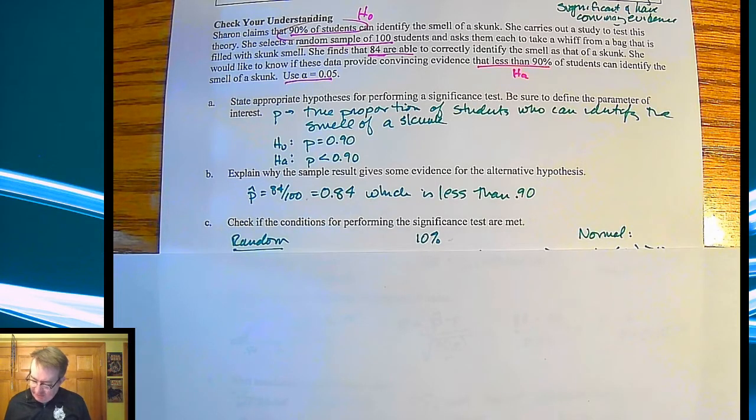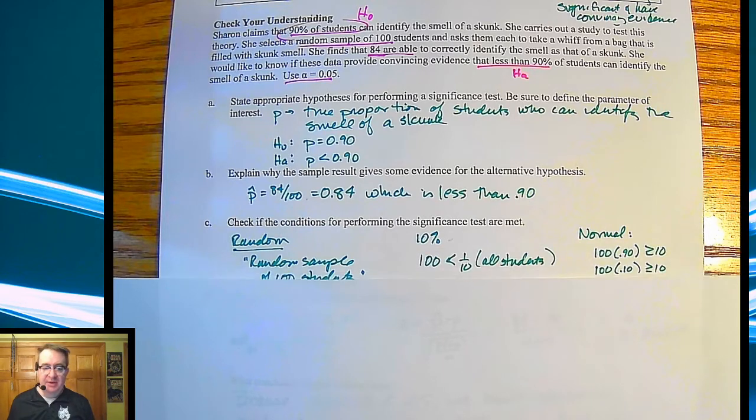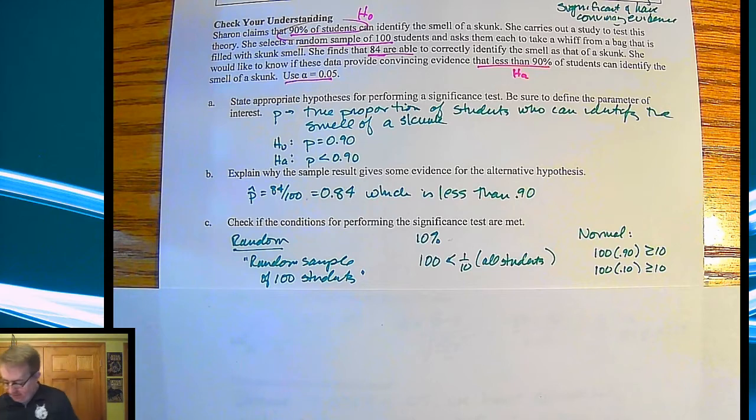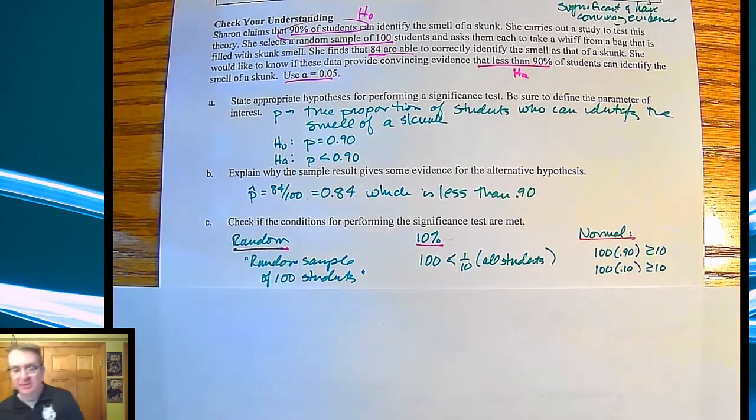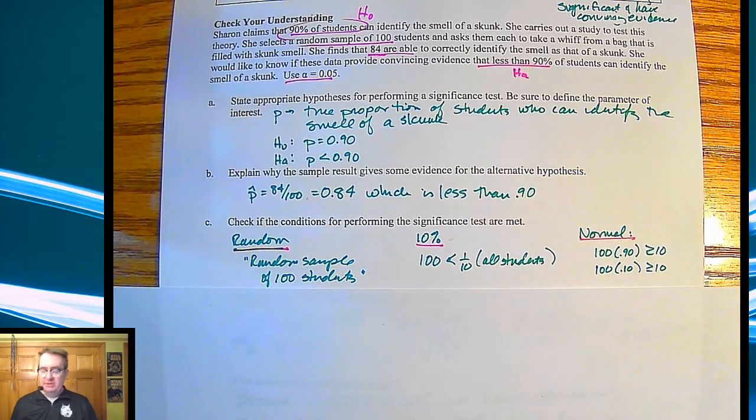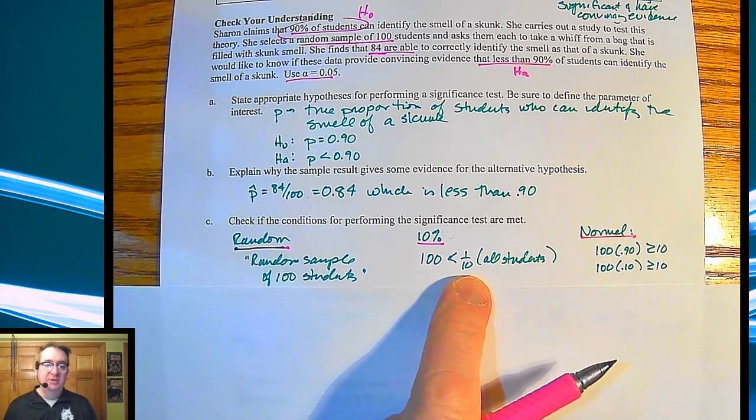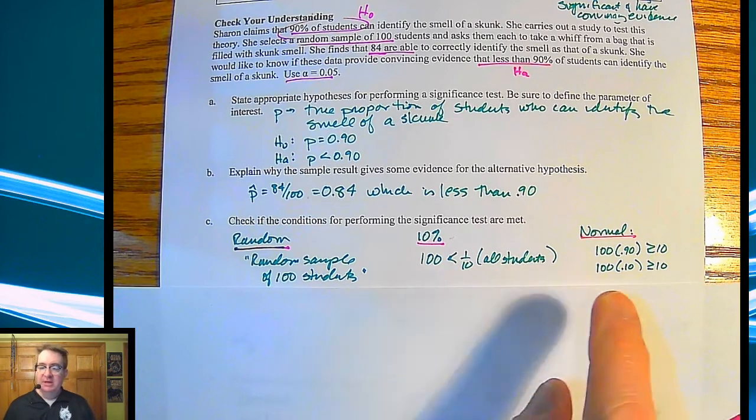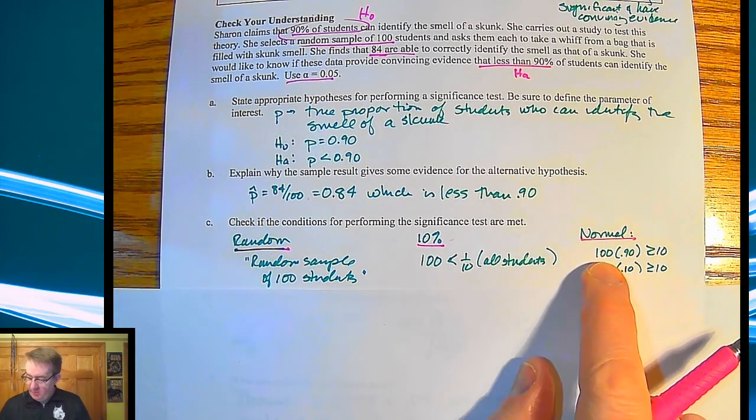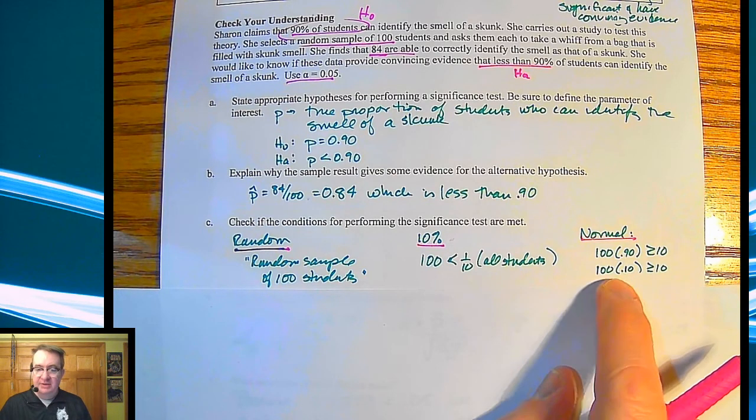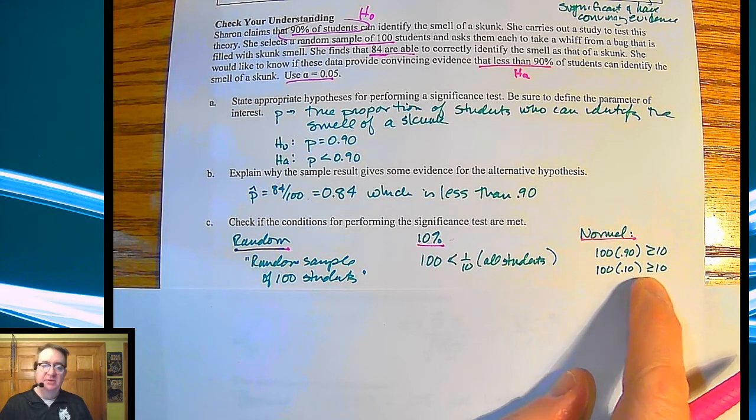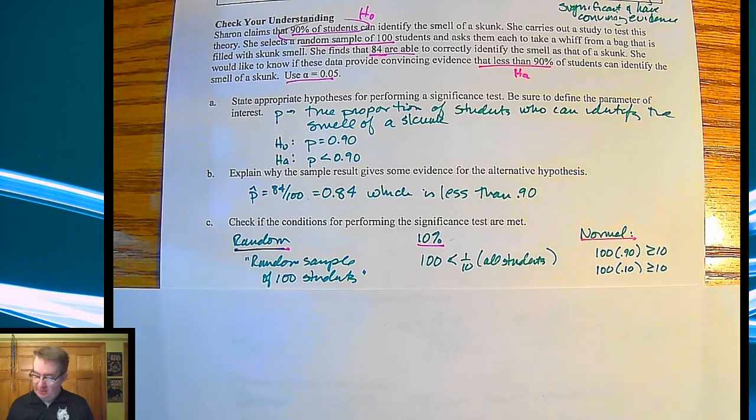So identify the conditions for performing the significance test. Is it random? It says it's random. So we're going to say random sample of 100 students. 10%, forgot to underline, my apologies. There, try to keep the colors consistent. So this is, again, for independence. 100 is definitely less than one-tenth of all students. And then for normal, 100 times 90% is less than 10. And then 100 times 10% is going to give us 10, which is also greater than or equal to 10. So we're okay there.